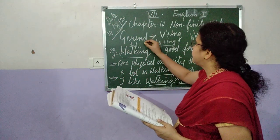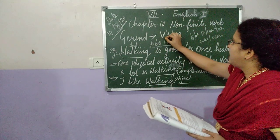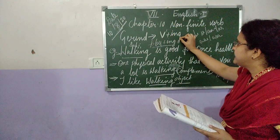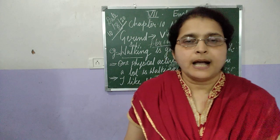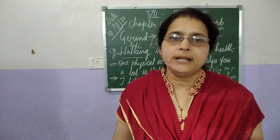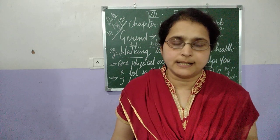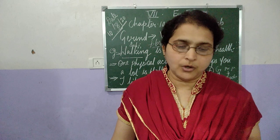Gerunds are words in ING form. The Gerund has the same form as the present participle — both are formed with the verb's first form plus ING. That is the form of the Gerund. And the Gerund acts as a noun in a sentence.